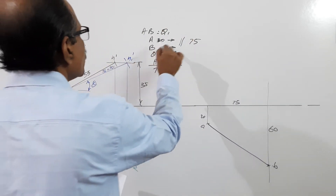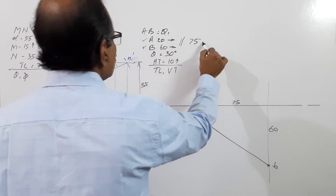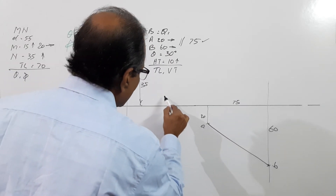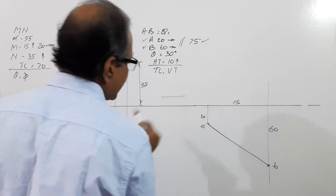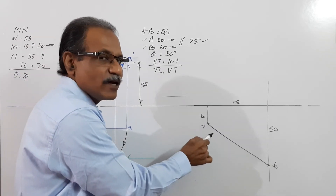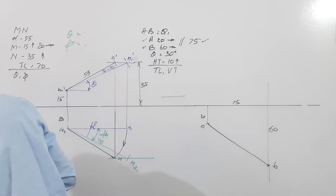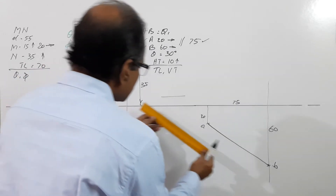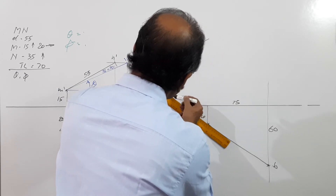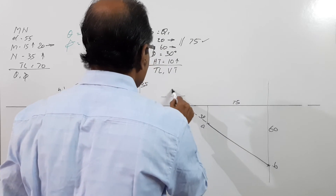These informations you have used. Now, HT is 10 mm above HP — so 10 mm above the XY line, draw a horizontal line. This line contains HT. You also know that HT will always lie on the extension of the plan. So extend the plan. This point is HT.